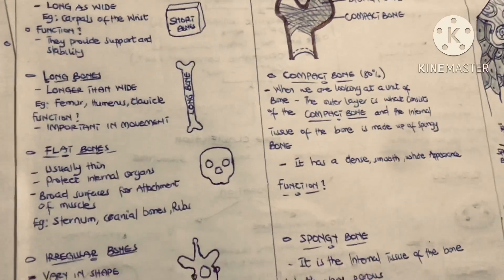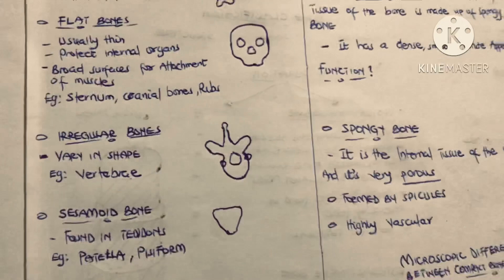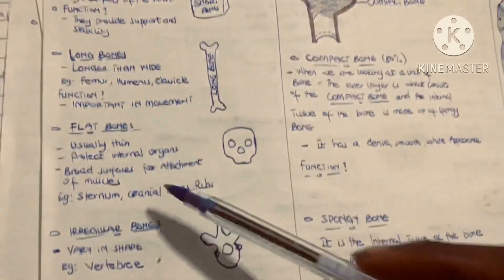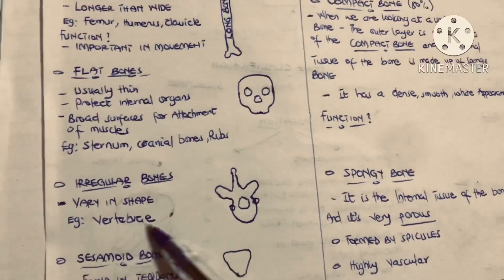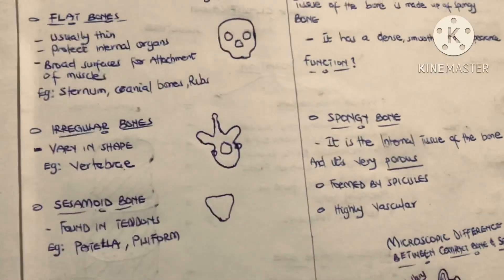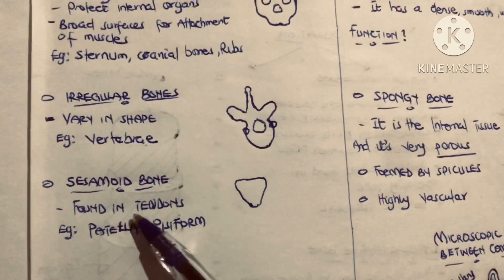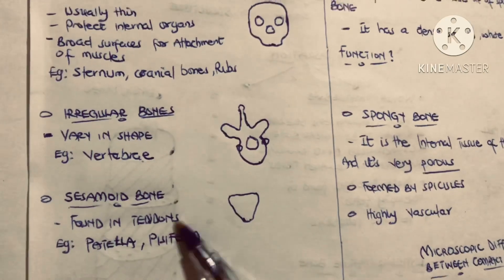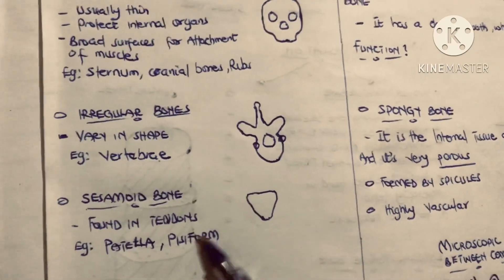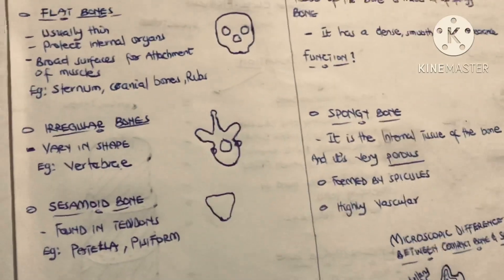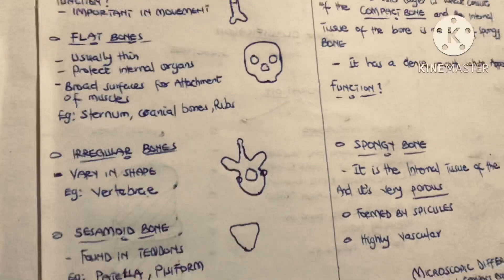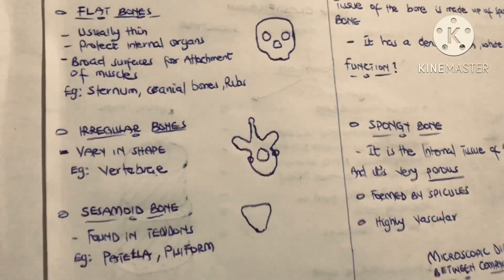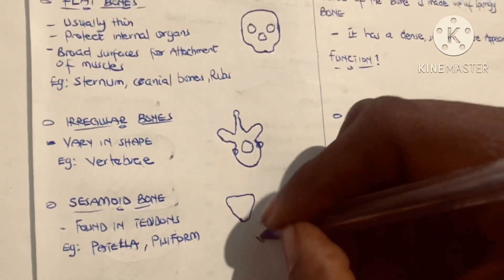Irregular bones vary in shape and cannot be classified under the other types — an example is the vertebrae. Sesamoid bones develop within tendons — an example is the patella (the kneecap), and also the pisiform, which is an example of a wrist bone. Finally, Wormian bones are found in sutures — when you look at your skull, sometimes bones develop within the sutures, and we call these Wormian bones.